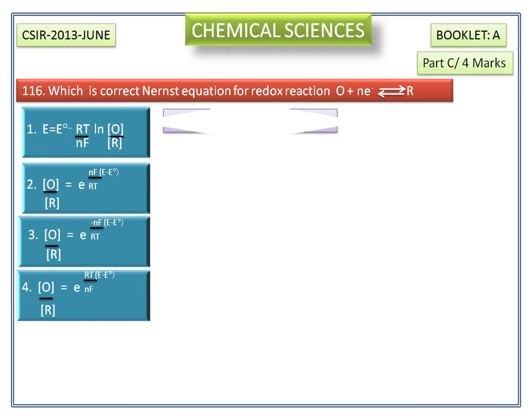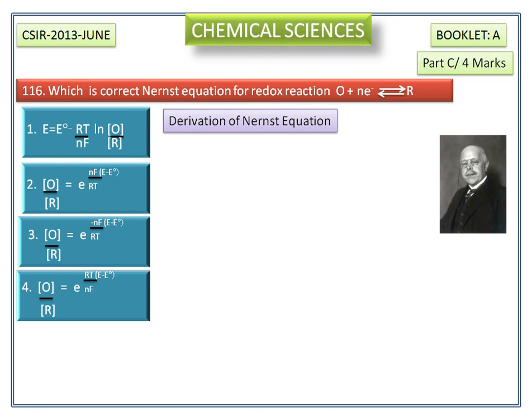Now we see the derivation of Nernst equation. Walter Nernst was a German physicist. He won the 1920 Nobel Prize in Chemistry. Nernst helped establish the modern field of physical chemistry and contributed to electrochemistry, thermodynamics and solid-state physics.